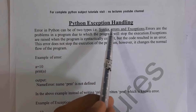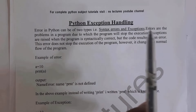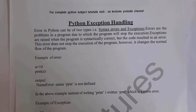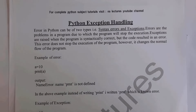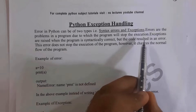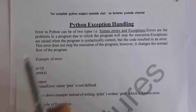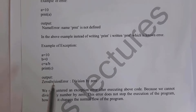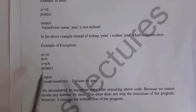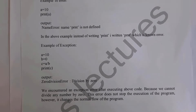Errors in Python can be of two types: one is a syntax error and the next one is exceptions. Errors are problems in a program due to which the program will stop execution — for example, writing 'prnt(8)' is a syntax error, and whenever a syntax error occurs the program stops execution. Exceptions are raised when the program is syntactically correct but the code results in an error. This error does not stop execution of the program; however, it changes the normal flow of the program. For example, a = 10, b = 0, c = a / b — you will get a ZeroDivisionError, but the code does not stop execution; it changes the normal flow.